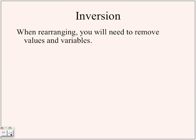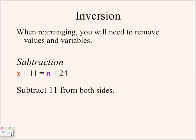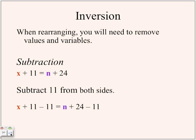So you have x plus 11 equals n plus 24. You're going to subtract 11 from both sides: x plus 11 minus 11 equals n plus 24 minus 11. Because plus 11 and minus 11 cancel out, you're left with x equals n plus 13.